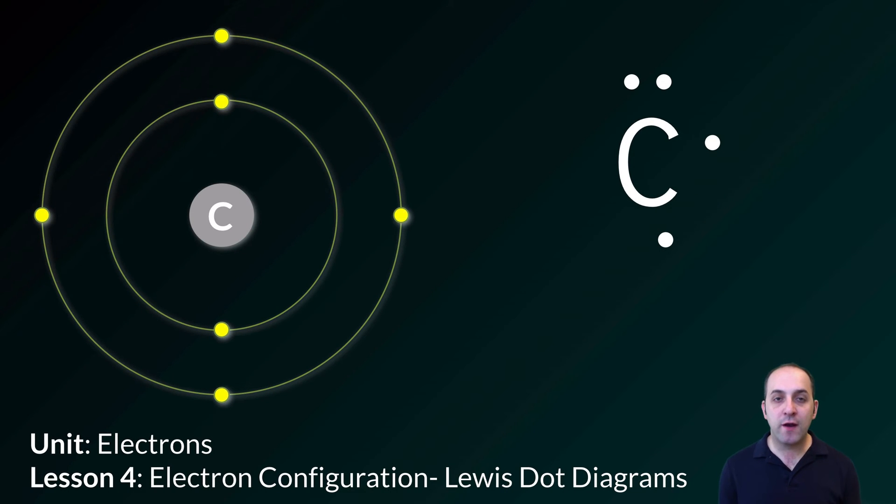Hi and welcome to Lesson 4 in our Electrons Unit. We're going to continue our discussion of electron configurations by looking at a different way to represent electrons, called the Lewis dot diagram. Here's carbon shown as a Bohr diagram and then as a Lewis dot diagram. Let's see how this works.